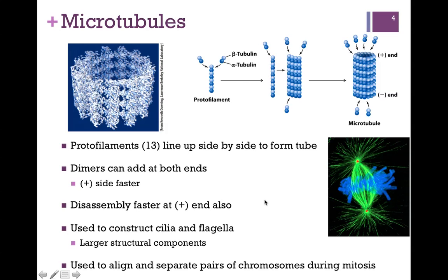These structures are used to construct cilia and flagella — very large structural components subject to a lot of frictional force, so they need to be very strong. The other biological role is that they're used to align and separate pairs of chromosomes during mitosis, where structure and stability is absolutely essential. Again, its structure fits perfectly its function within the cell. On the upper left, you can see a cryo-electron micrograph of the microtubule, which gives a better idea of its shape.